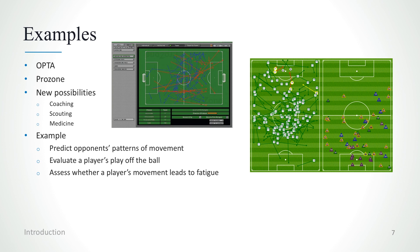Opta and Prozone are the two main players in the field of data collection in soccer. Both companies collect lots of statistics about what's taking place on pitch, such as the position of each individual player, where a pass took place, and where a shot was actually heading to. This clearly opens up new possibilities for coaching, scouting and medicine. For example, a coach might be interested in predicting the opponent's patterns of movement. A scout might be more interested in evaluating a player's play off the ball. A doctor might be more interested in assessing whether a player's movement on pitch affects his probability of getting injured or fatigued.